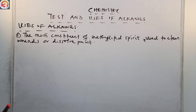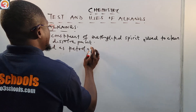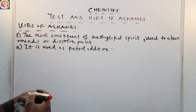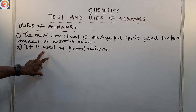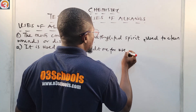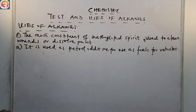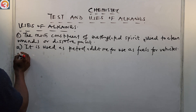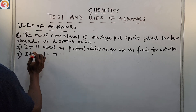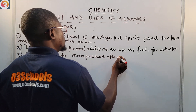Alkanols are also used as petrol additives — they are added to petrol to make it more efficient, used as fuel for vehicles. Additionally, alkanols are used to manufacture other chemicals.